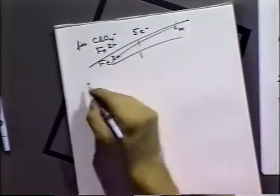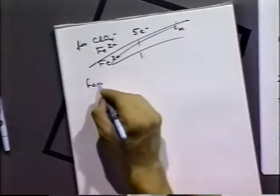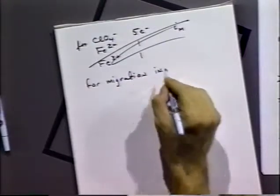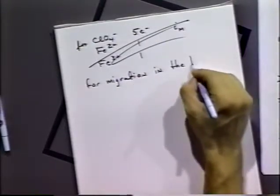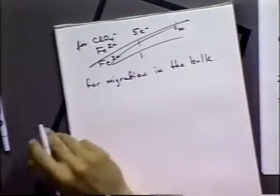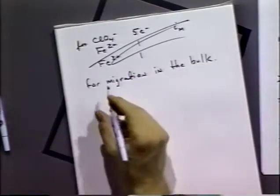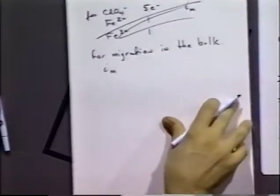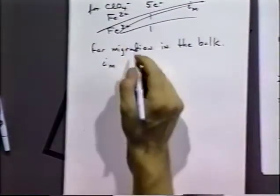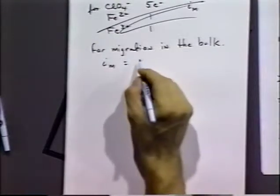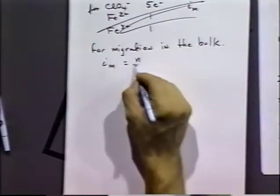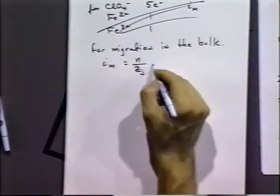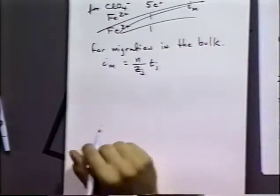So, sorry. For migration in the bulk, the total amount of current carried in the migration process is characterized by I sub m. And that turns out to be equal to n over the charge z sub j times transference numbers of the species.